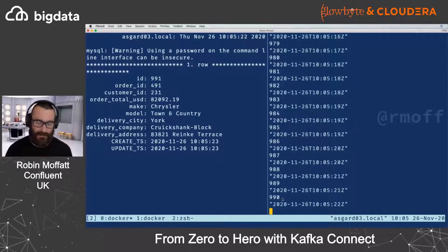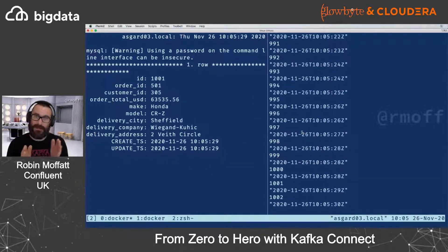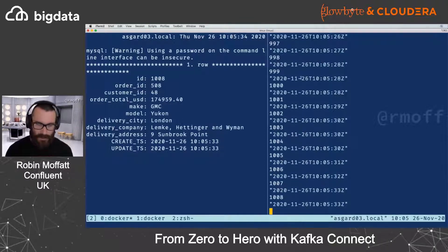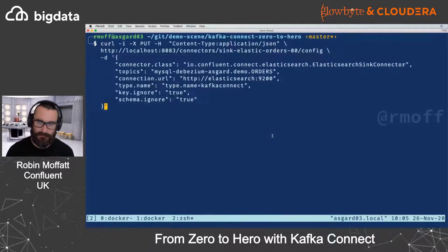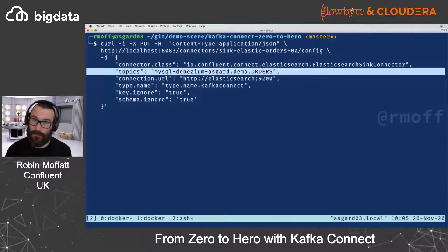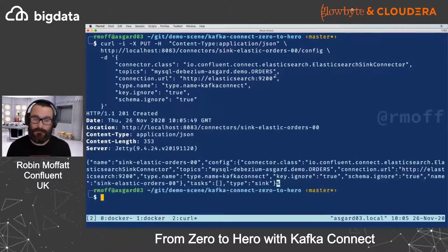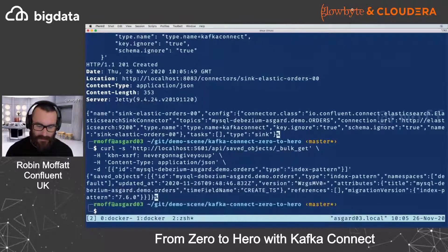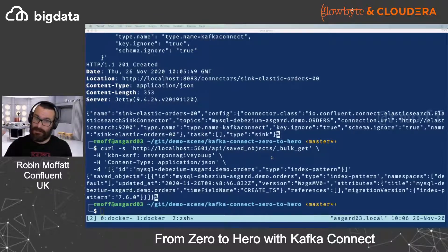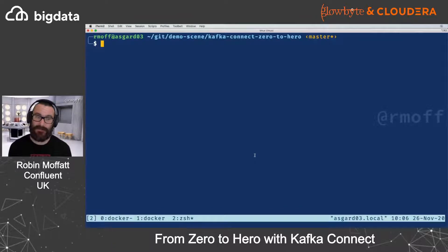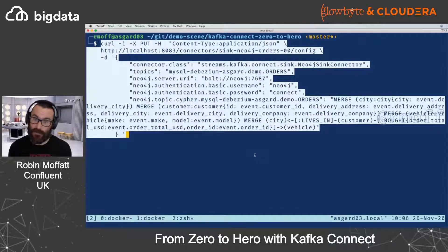Now let's take that data from Kafka as it arrives in the topic and stream it into somewhere else. We're going to stream it into Elasticsearch — specifying the orders topic as the data source and syncing it down to Elasticsearch. But this also illustrates an important point: once we've consumed data from a Kafka topic it's available to use elsewhere as well. So we've streamed it over to Elasticsearch, but let's also take that same data and put it in a graph database — Neo4j.